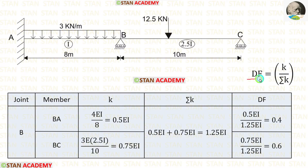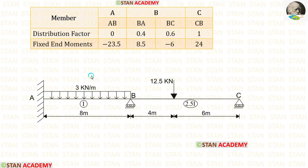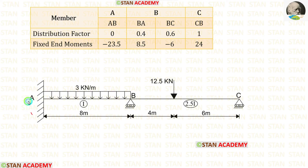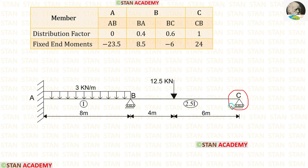Now let us start making the moment distribution table. First, enter all members, then enter the distribution factor values. At the fixed end (AB), the distribution factor is 0. At the roller-supported end (CB), the distribution factor is 1. At joint B, we apply the two calculated distribution factor values for BA and BC.